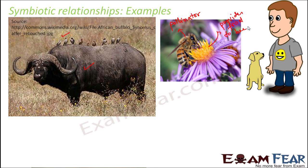Take the example of human beings and their domesticated animals. Domesticated animals get their food and care from human beings, and at the same time they also do a lot for human beings. For example, a dog is very faithful to its master. These are the kind of relationships where you have mutual benefit.